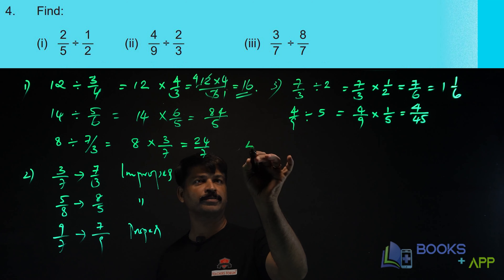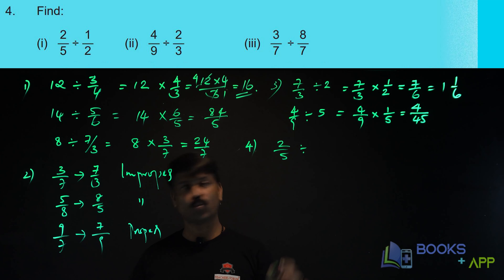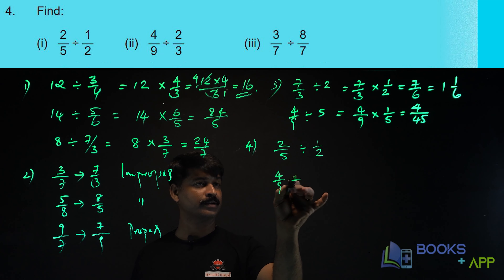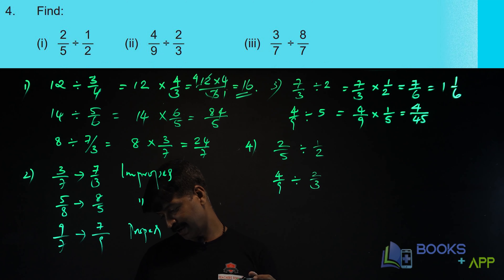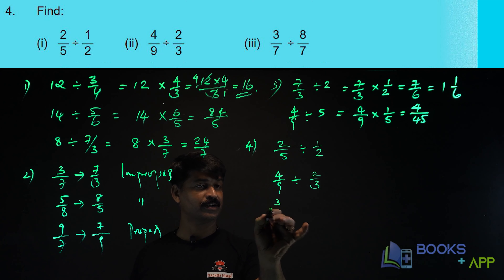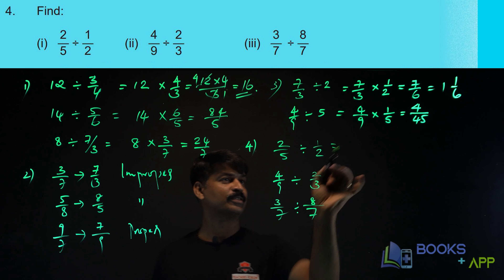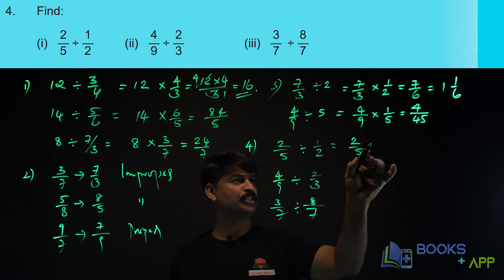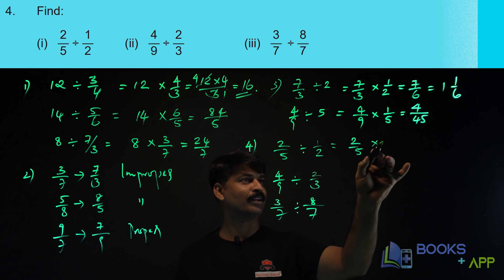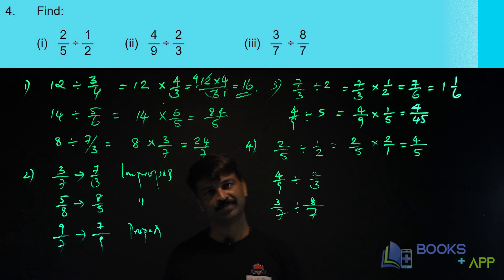Now let us solve question number 4. First: find 2 by 5 divided by 1 by 2. The procedure is the same — instead of division it becomes multiplication, but you take the reciprocal, which is 2 by 1. So the answer is 2 twos are 4, divided by 5 into 1, which is 5. So the answer is 4 by 5.